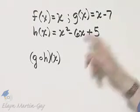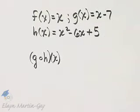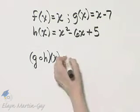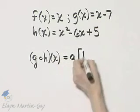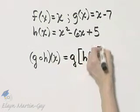Given these functions, let's find g of h of x. By definition, that's g of bracket h of x.